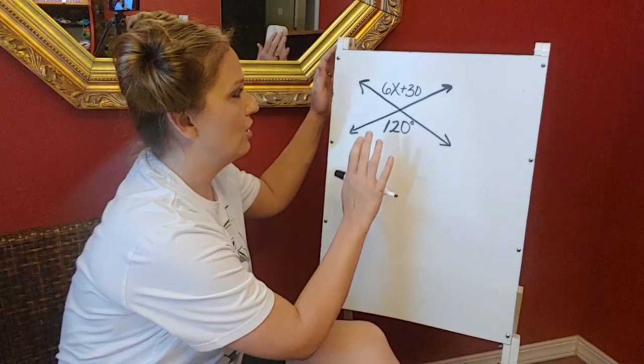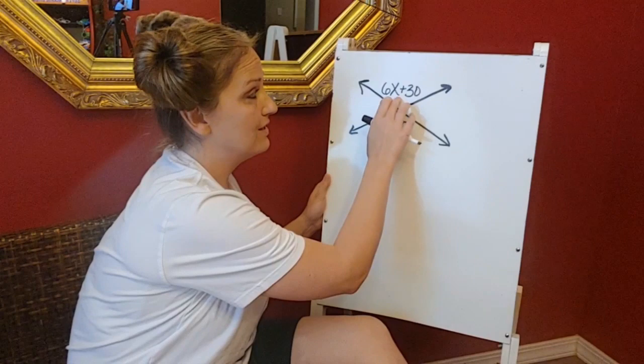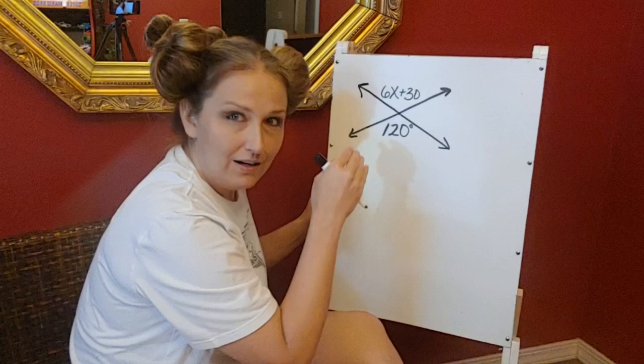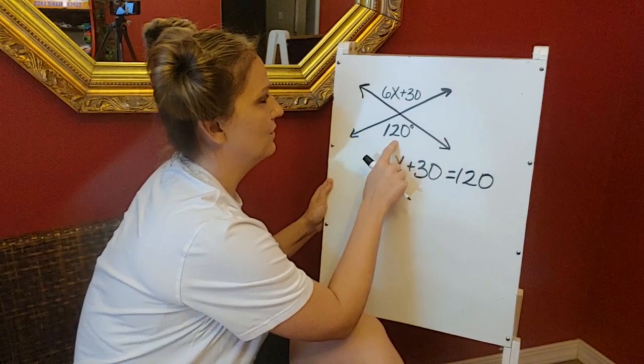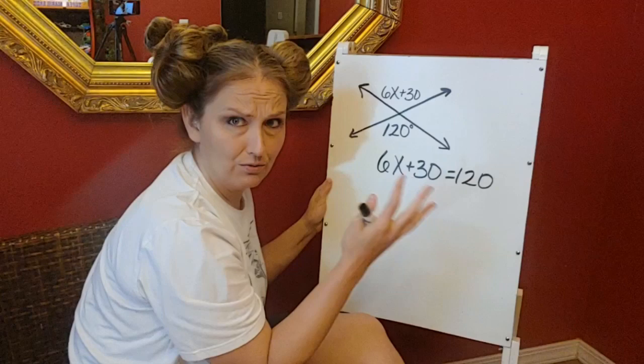So if this angle is 120, this angle up here has to be 120 degrees also. So in order to figure out what x is, all we have to do is set these two angles equal to one another. So I'm going to take this 6x plus 30 and I'm going to set it equal to the 120. Because whatever x is here, 6x plus 30 has to come out to be equal to 120.